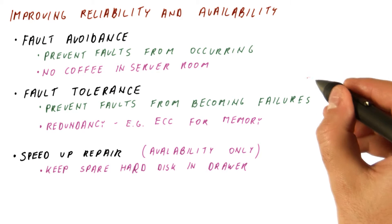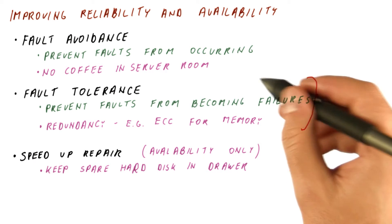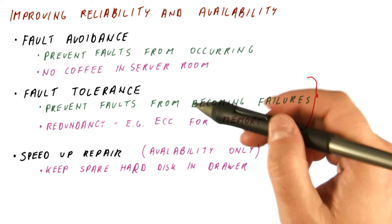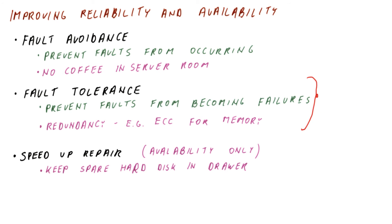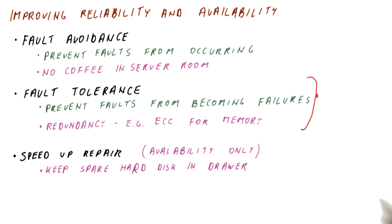So we will now look more closely at the fault tolerance techniques, which are usually techniques that we can apply in computer architecture to try to prevent faults from becoming failures. And thus, make systems both more reliable and more available.